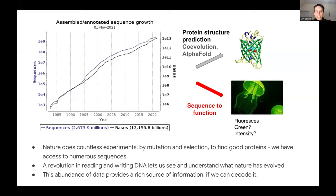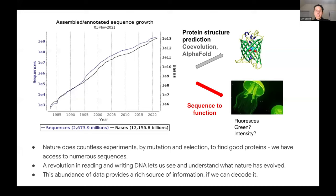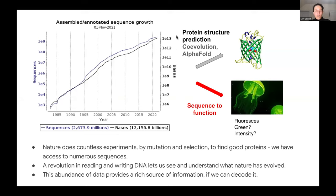Nature does countless experiments by mutation and selection to find good proteins, and we have access to all of this data. There's also been a revolution in not only reading DNA but also writing it — we can synthesize sequences on demand. You can print oligos of up to 300 base pairs very easily, and synthesizing larger sequences is getting easier as people develop stitching techniques. There's an enormous abundance of data that provides a really rich source of information if we can figure out how to decode it.